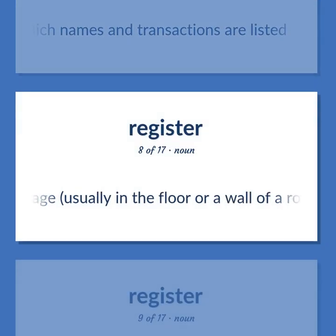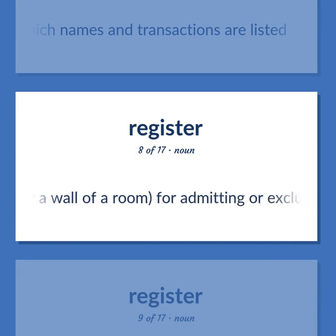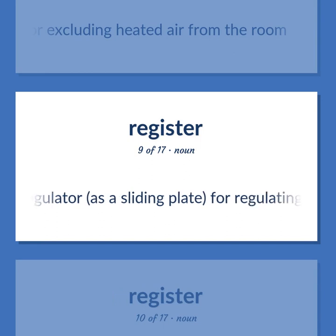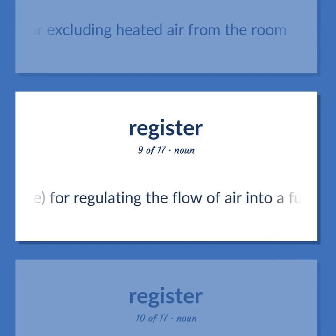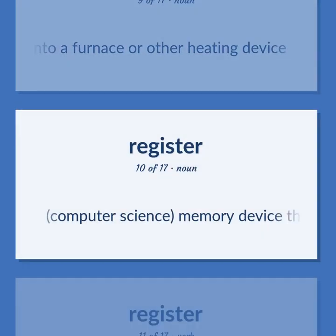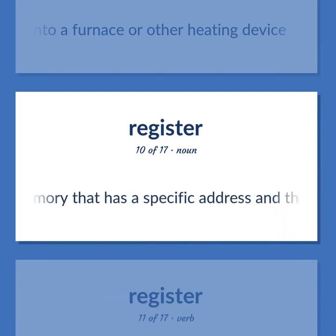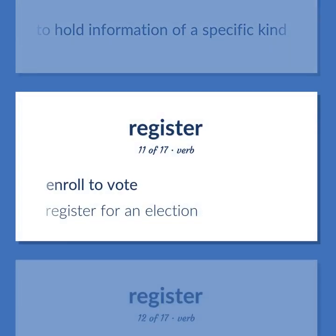Register: an air passage, usually in the floor or a wall of a room, for admitting or excluding heated air from the room. A regulator, such as a sliding plate, for regulating the flow of air into a furnace or other heating device. Computer science: a memory device that is part of computer memory, has a specific address, and is used to hold information of a specific kind. Enroll to vote. Register for an election.